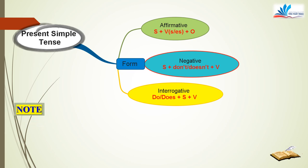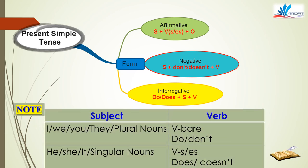Ở phần này, cô có một chú ý: nếu chủ ngữ là I, we, you, they hoặc danh từ số nhiều, thì động từ ở dạng nguyên mẫu; câu phủ định và nghi vấn dùng do/don't. Nhưng nếu chủ ngữ là he, she, it hoặc danh từ số ít, thì động từ thêm S hoặc ES; câu phủ định và nghi vấn dùng does/doesn't.